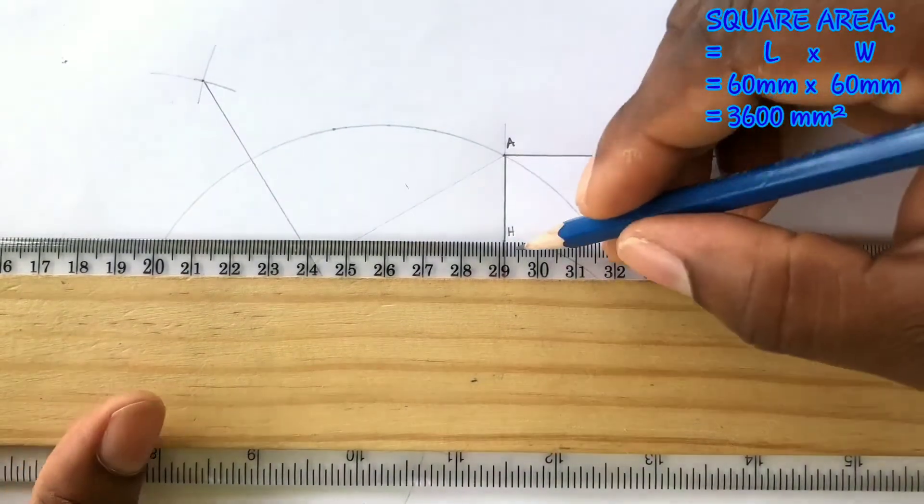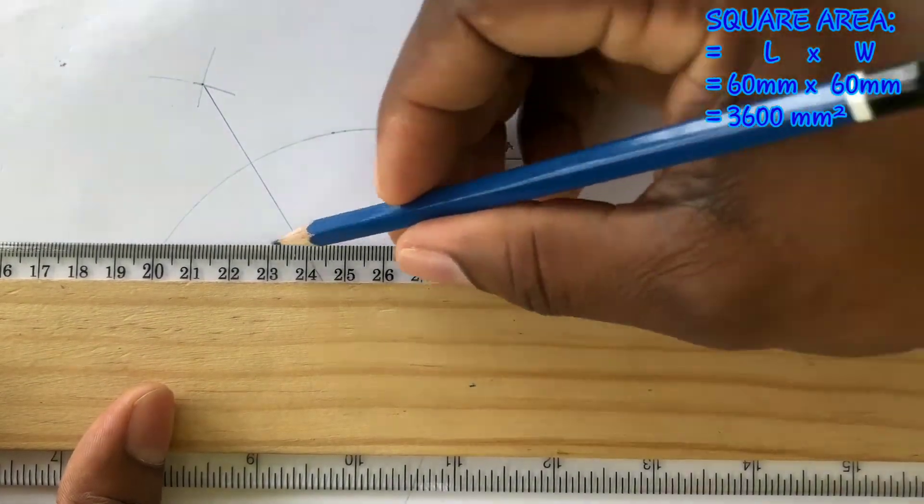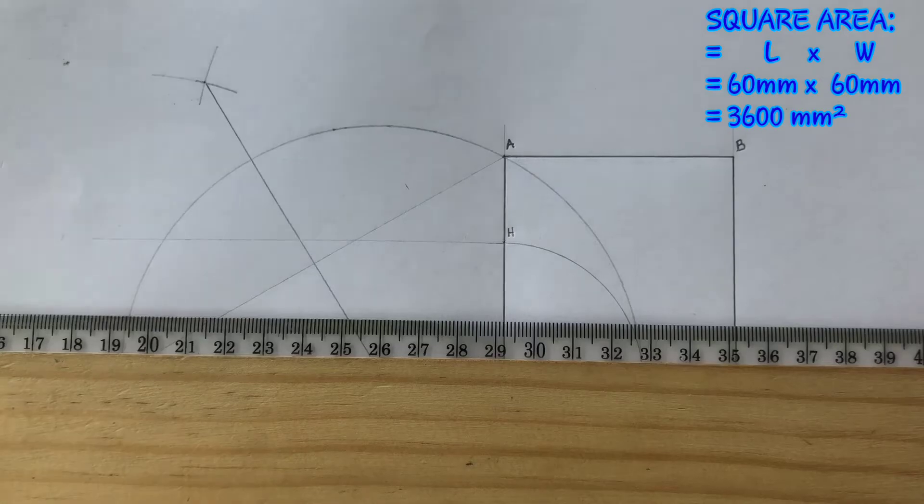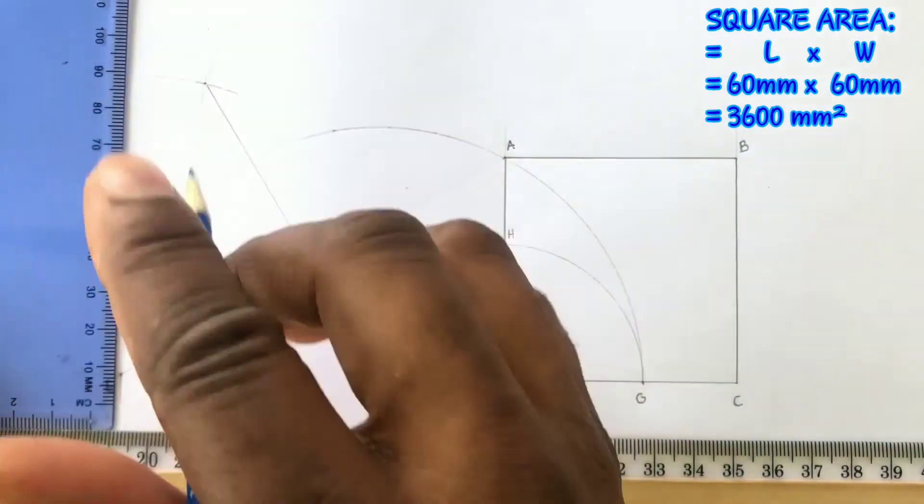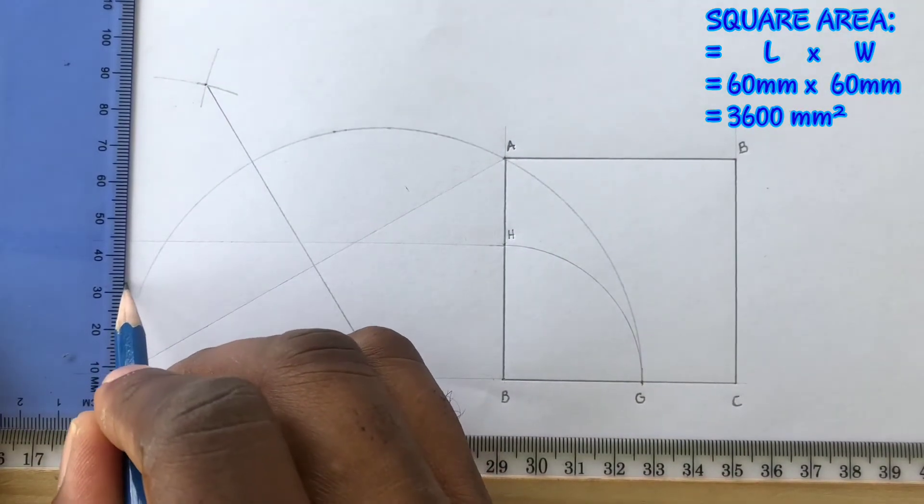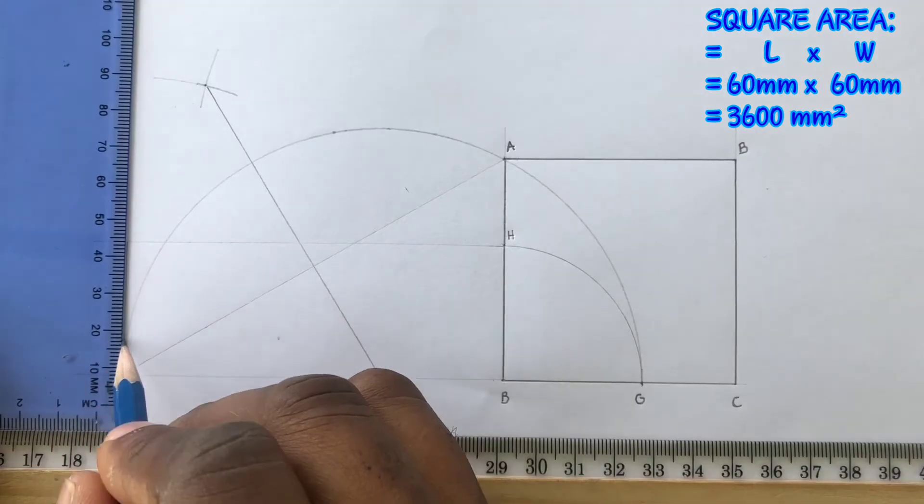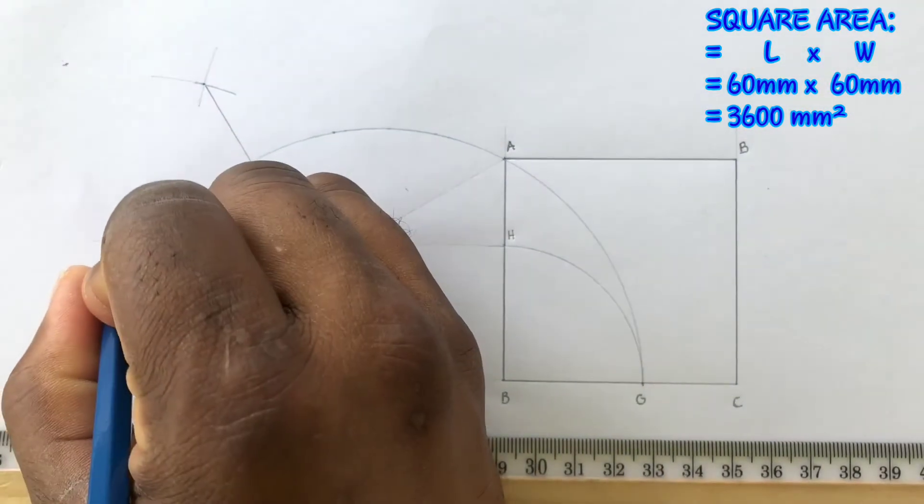You will now use your T-square to draw a horizontal line towards the left. Also draw a vertical line using your T-square and your set square from point E to intersect the previous line you drew. This will now give you point I.